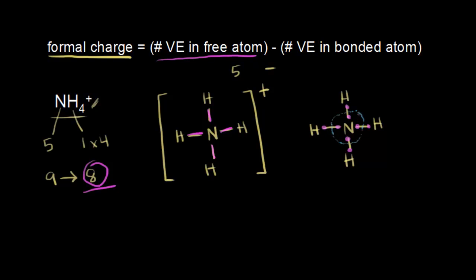Going around all the covalent bonds, we can see that nitrogen is surrounded by four valence electrons in the bonded atom. So it's 5 minus 4, which gives us a formal charge of plus 1. So the nitrogen has a plus 1 formal charge.